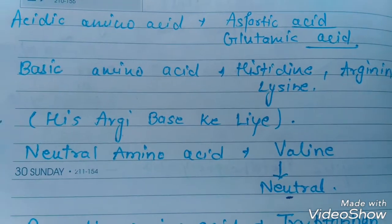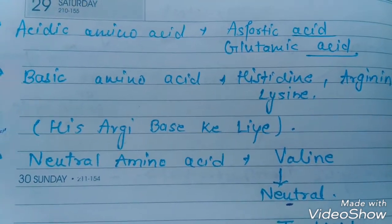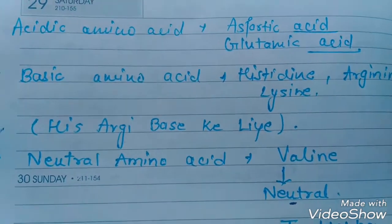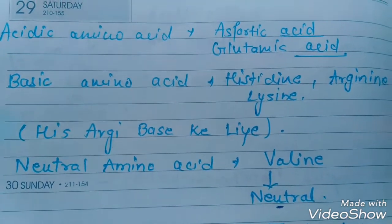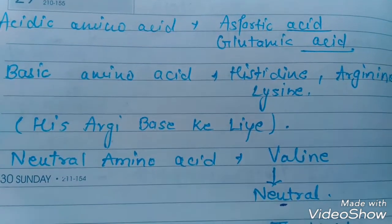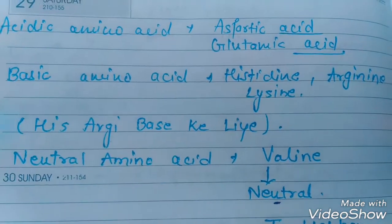We are going to start. First is acidic amino acid. Acidic amino acids — a simple example is aspartic acid and glutamic acid.